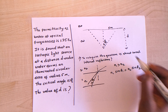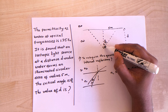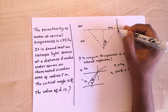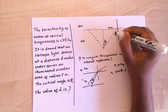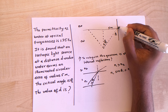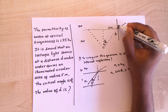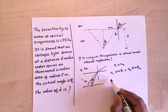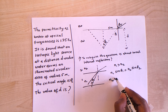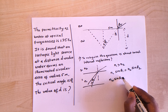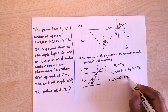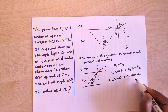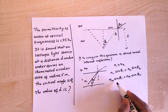Let's say this ray is going and touching the surface of the water. Drawing a normal, if theta_i is the incident angle and theta_r is the refracted angle, we can write: n_w sin(theta_i) = n_a sin(theta_r). For the critical angle, theta_r is 90 degrees, so sin(theta_r) = 1, giving us: n_w sin(theta_i) = n_a.